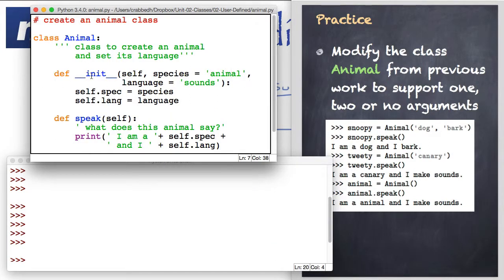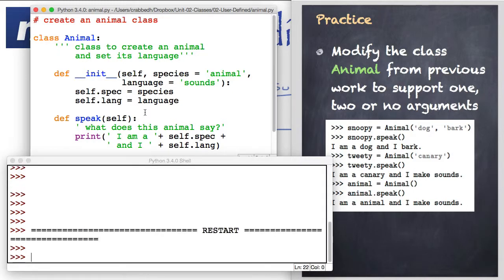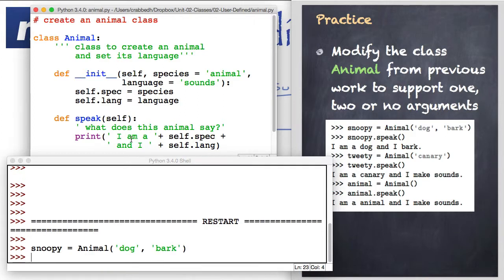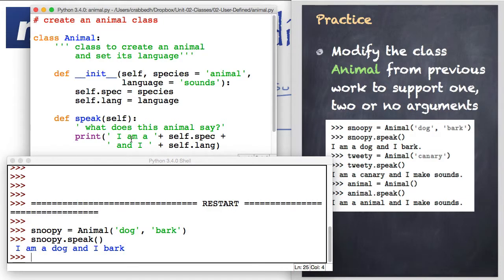Note here we overloaded init by creating this method. We set species equal to animal and language equal to sounds as a default. If those values are added then they'll get set to these instance variables. Let's see how this works. I can create Snoopy again as a dog that barks. If I say snoopy.speak we get the behavior as before.